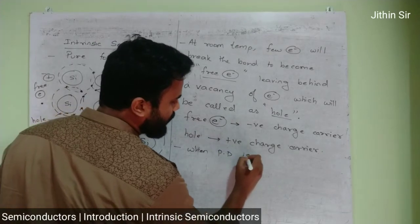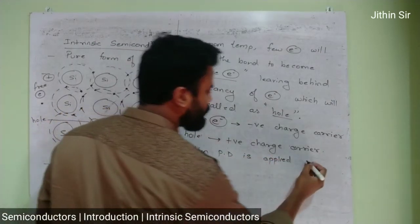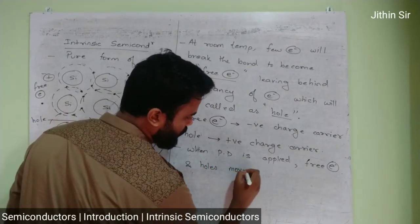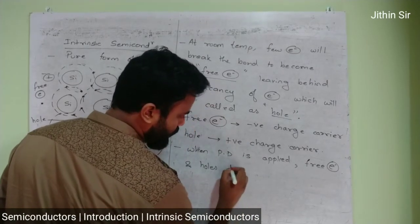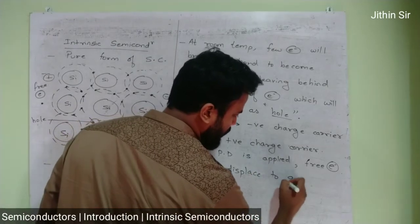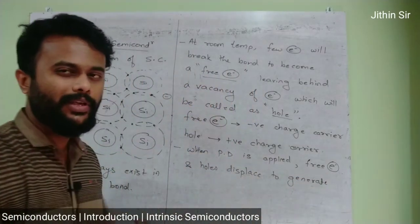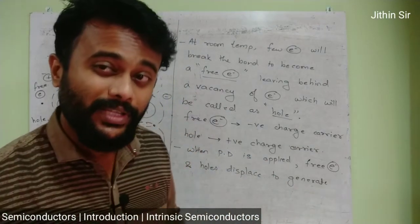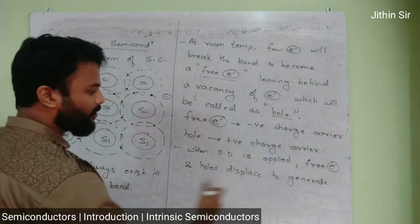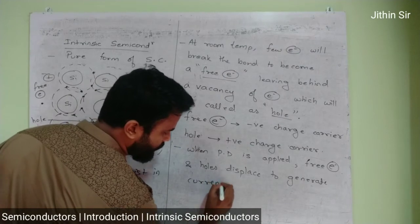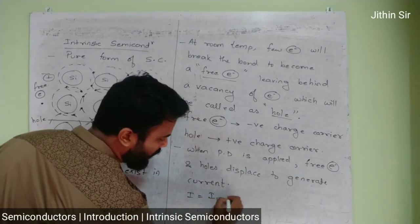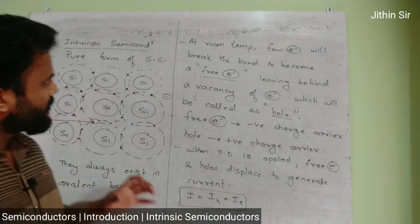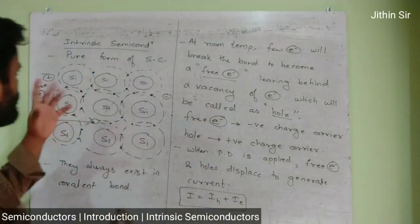When potential difference is applied, free electrons and holes move and displace to generate current. Charge flows. This is the basic understanding of a semiconductor — the pure form of semiconductor, also called an intrinsic semiconductor.